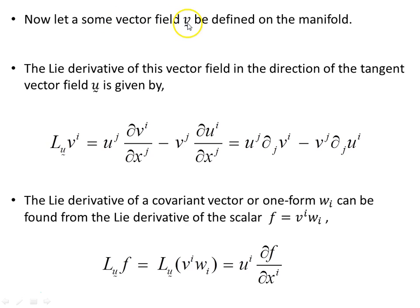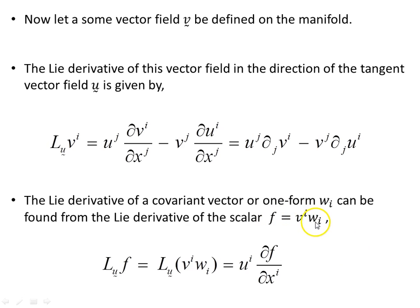Now let some vector field v be defined on the manifold, and the Lie derivative of this vector field in the direction of the tangent vector field u is given by the commutator expression — dealt with in a previous video. The Lie derivative of a covariant vector, or one-form, w_i, can be found from the Lie derivative of the scalar f, which results from the inner scalar product of a vector with a one-form.